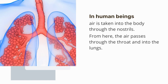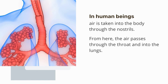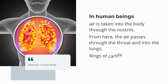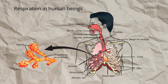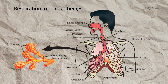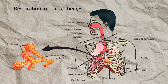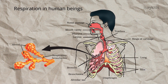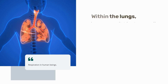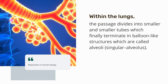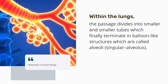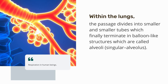From here, the air passes through the throat and into the lungs. Rings of cartilage are present in the throat, ensuring that the air passage does not collapse. Within the lungs, the passage divides into smaller and smaller tubes, which finally terminate in balloon-like structures called alveoli.